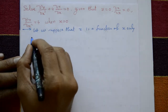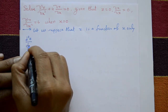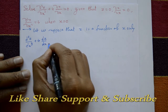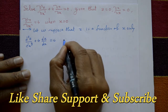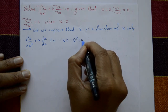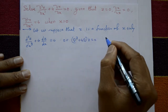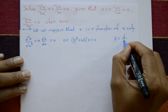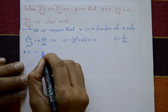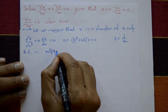Assume the PDE as an ODE: d³z/dx³ + 4(dz/dx) = 0, or (D³ + 4D)z = 0, where D stands for d/dx. Now find the roots; the auxiliary equation is m³ + 4m = 0.